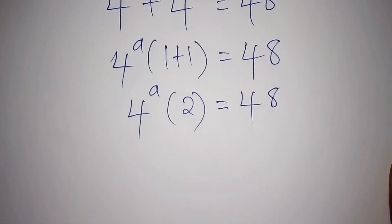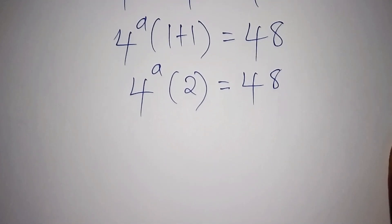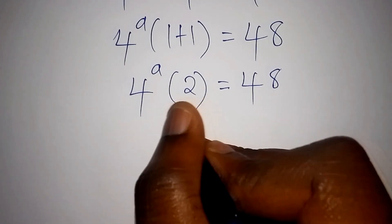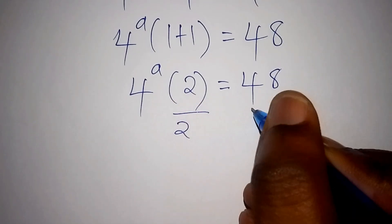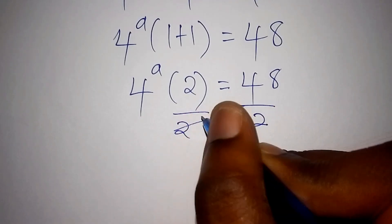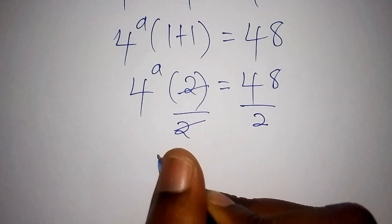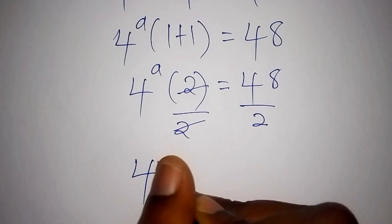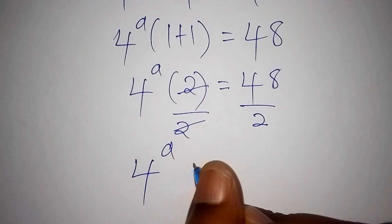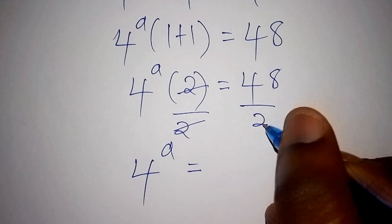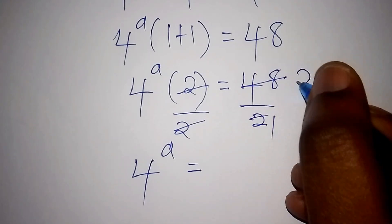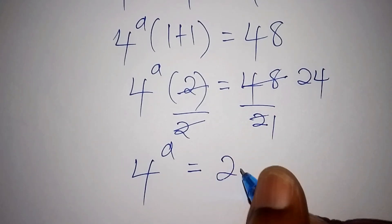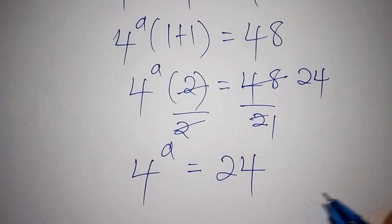The next step is to divide both sides by 2 — divide this side by 2, and this side also by 2. The 2s cancel, so now we have 4 to the power of a is equals to 24.